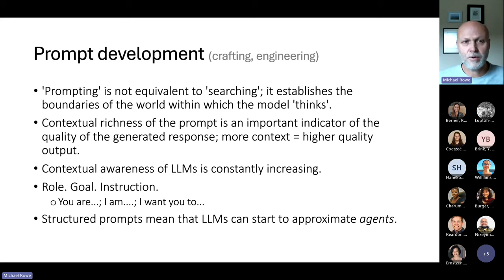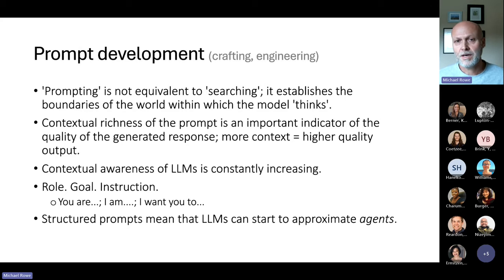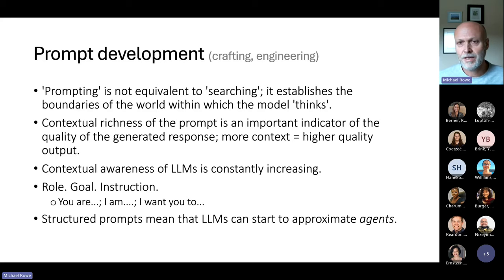Prompting is really important — it's not the equivalent of search. We've become accustomed to breaking search queries down into keywords, but in generative AI, prompting actually establishes the boundaries of the world within which the model thinks. Search engines taught us to reduce complexity to get responses. With generative AI, it works the other way around — we have to provide complex queries in order to get what we're looking for. That contextual richness is a really important indicator of quality: more context means higher quality output.